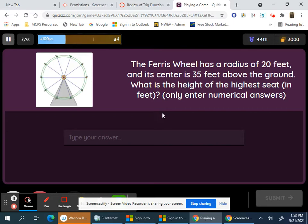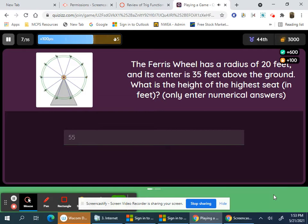The ferris wheel, what's the height of the highest seat? It would be 35 plus 20, which would be 55.